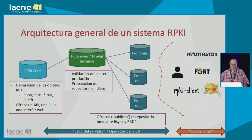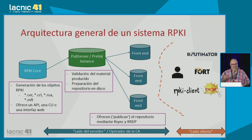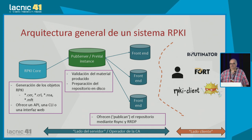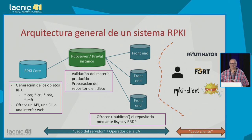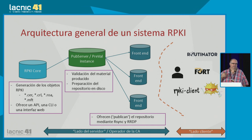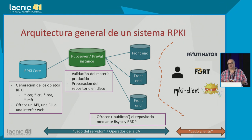Any system you may imagine for RPKI has three layers. Essentially, they have a core that is the most complex part — it is responsible for processing cryptography and generates all the objects that go into an RPKI repository. Normally these cores do not have an interface for humans; they operate through APIs.